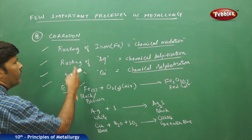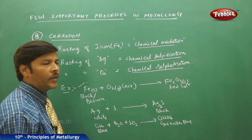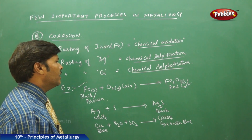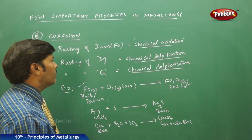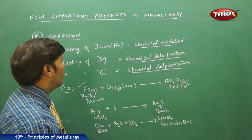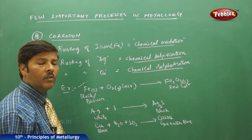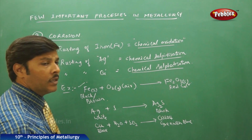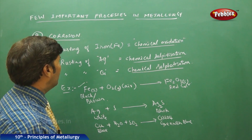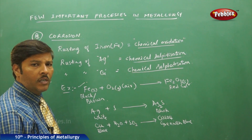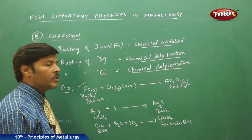Corrosion takes different forms: chemical oxidation of iron (rusting), and chemical sulfitization of silver and copper. Different mechanisms are involved for different metals during rusting, which is a part of corrosion. Rusting is most significant in the case of iron, and we will now have an extended discussion on the mechanism of rusting of iron in particular.